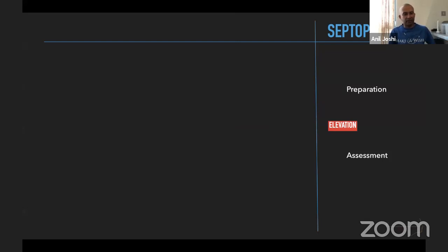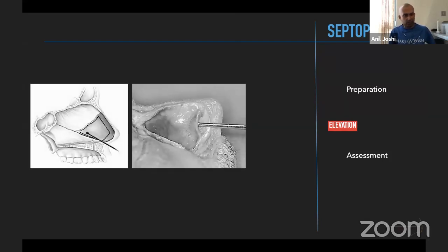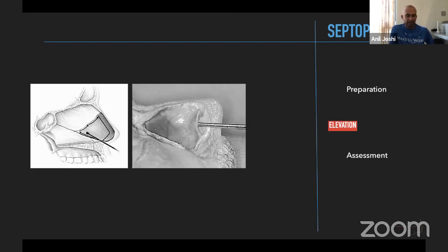We then elevate the perichondrium and periosteum accordingly. In certain nooks and corners — especially with a severely deviated septum where there are fractured segments — there will be difficulty elevating the lining. In such cases there may be a small tear; do not fret, but be careful not to tear on the contralateral side in the same position. If you see a tear contralaterally in a similar position, close it then and there rather than wait, because invariably you may see a septal perforation post-operatively, which is even more difficult to treat.